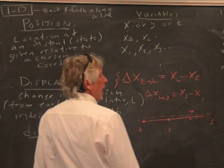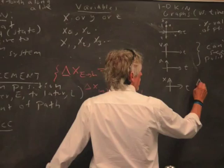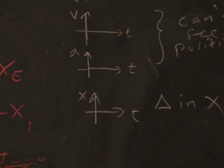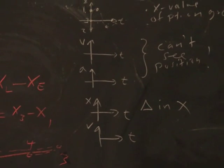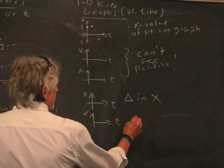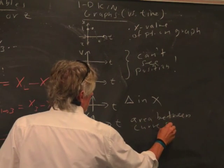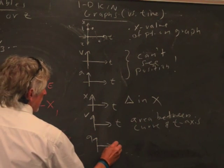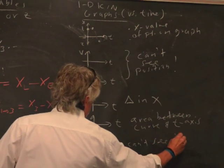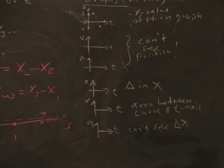Now how do you see this on these graphs? X versus t, you look at the change in the x value. And we'll get to this a little bit later. The velocity versus time, when we get into some calculus, it's seen as the area between the curve and the t-axis. So this is an introduction. This isn't necessarily clear right now. And now a at a t, you can't see delta x straight away, not in a simple kind of way, directly.